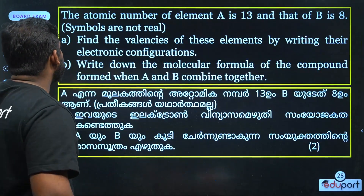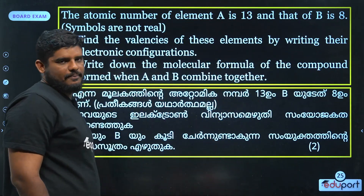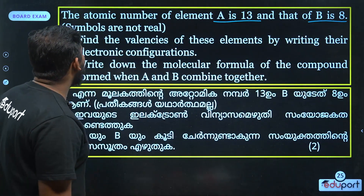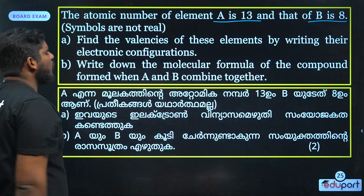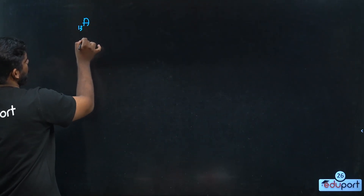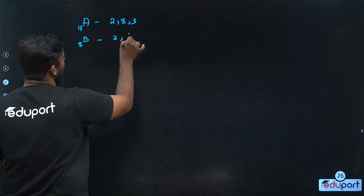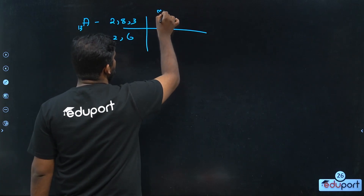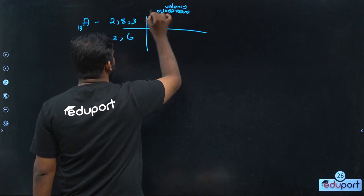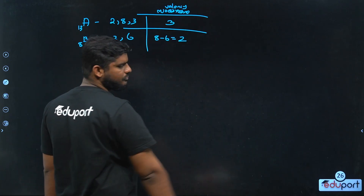The atomic number of element A is 13 and B is 8. Find the valencies by writing the electronic configuration. A is 13: configuration 2, 8, 3. Valency of A is 3 (less than 4). B is 8: configuration 2, 6. Valency of B: 8 minus 6 equals 2.